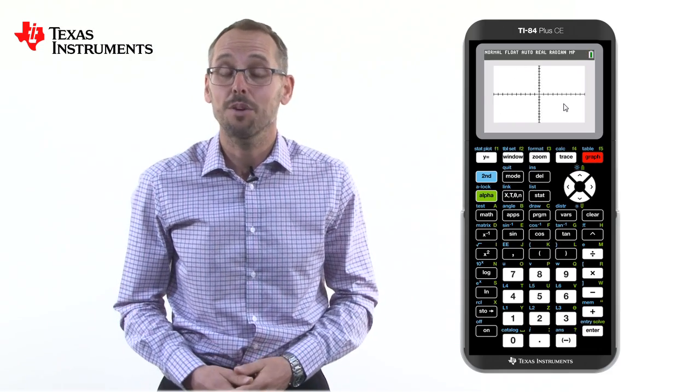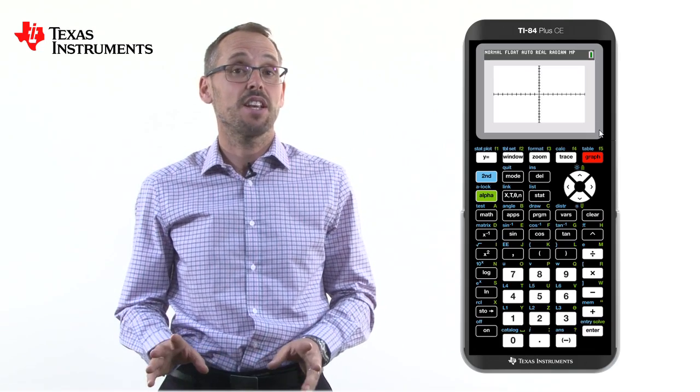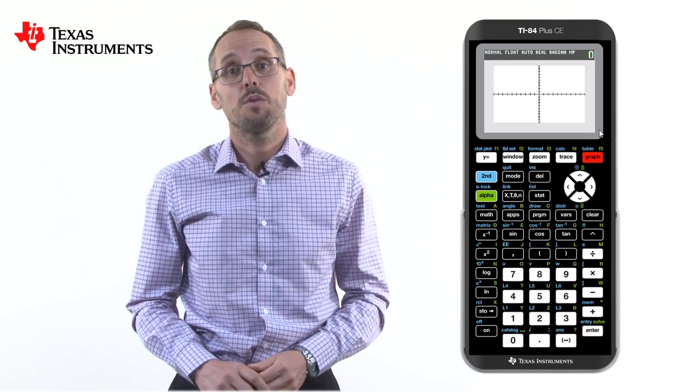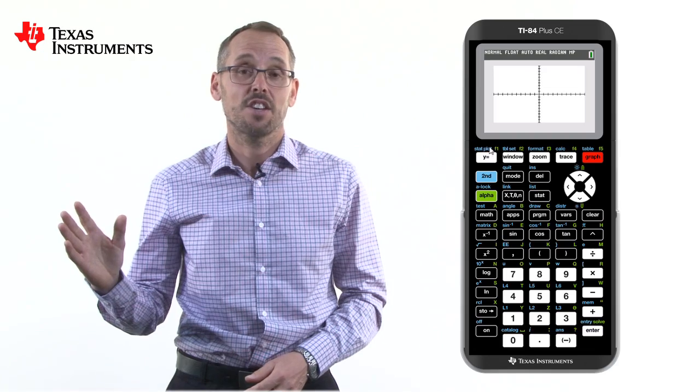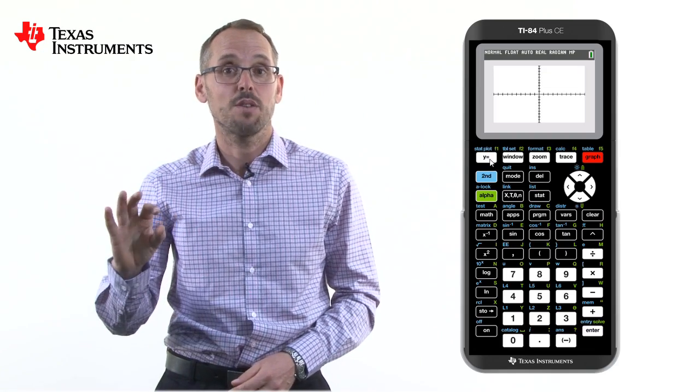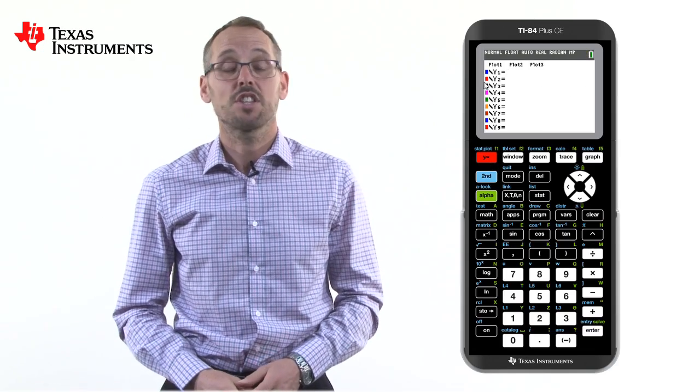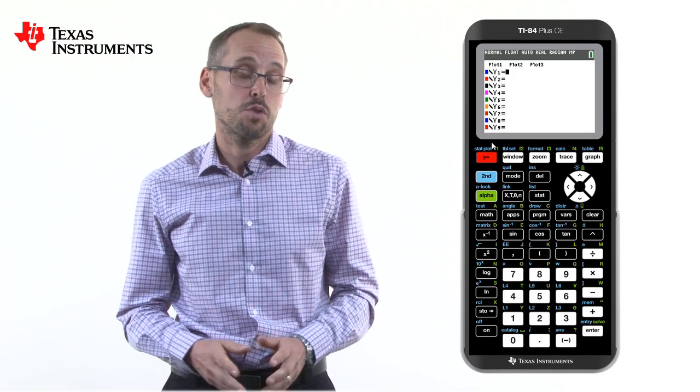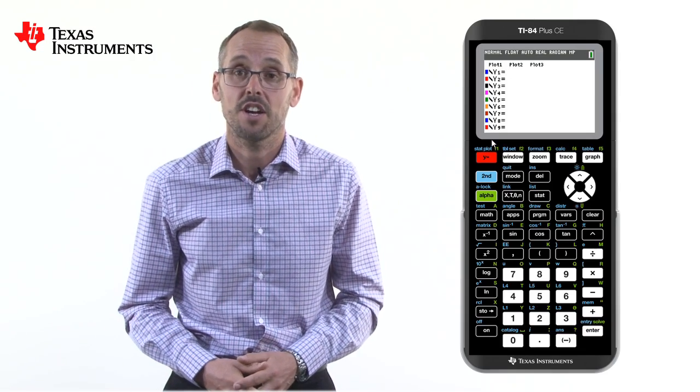Well, the calculator is not a mind reader and we need to type in an equation. To do this, we need to go to the top left-hand side of the handheld and press y equals. That will allow us to type in up to ten different equations of which we can graph all ten if we so desire.